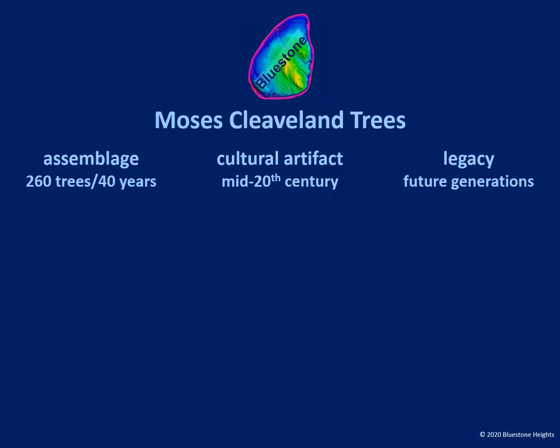A few words about context. I see Moses Cleveland trees as three things: as an assemblage of sites, as a mid-century cultural artifact, and as a legacy for the future. We, the Forest City Working Group, are well-placed to send on the legacy. To do right, nevertheless, we must know the assemblage and comprehend the artifact. Mapping is key.